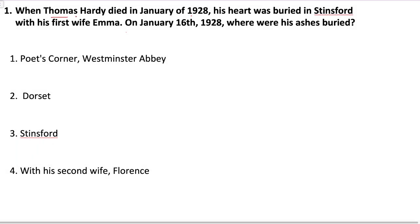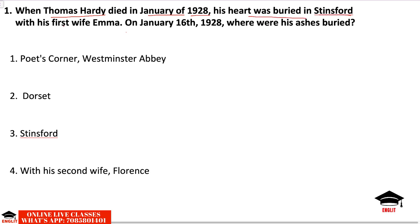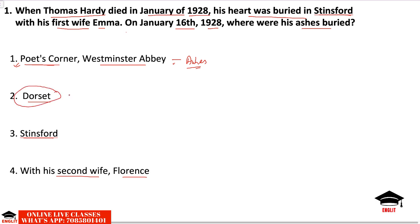The first question: when Thomas Hardy died in January 1928, his heart was buried in Stinsford with his wife Emma. On January 16, 1928, where were his ashes buried — Poet's Corner Westminster Abbey, Dorset, Stinsford, or with his second wife Florence? The correct answer is Poet's Corner, Westminster Abbey. Dorset was the place where he was born — near Dorchester at Higher Bochampton.